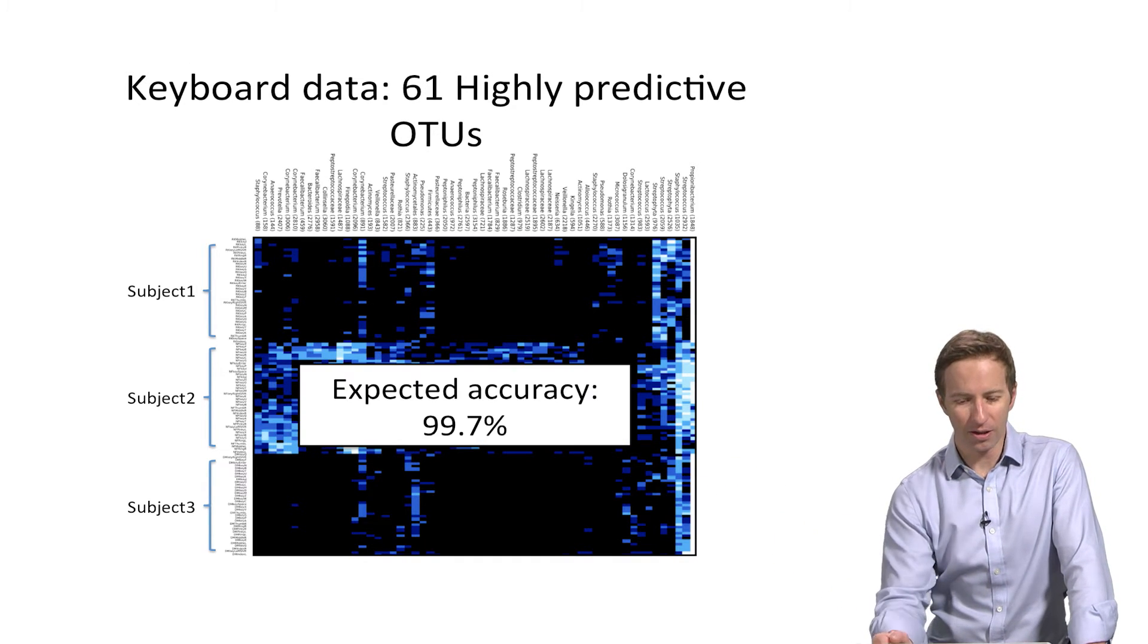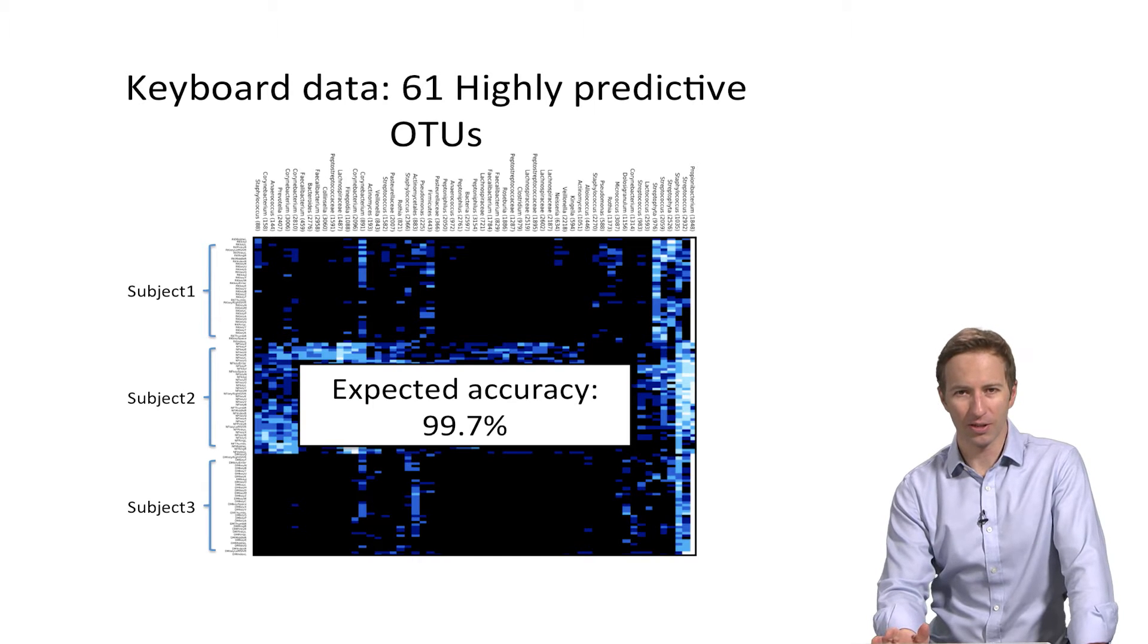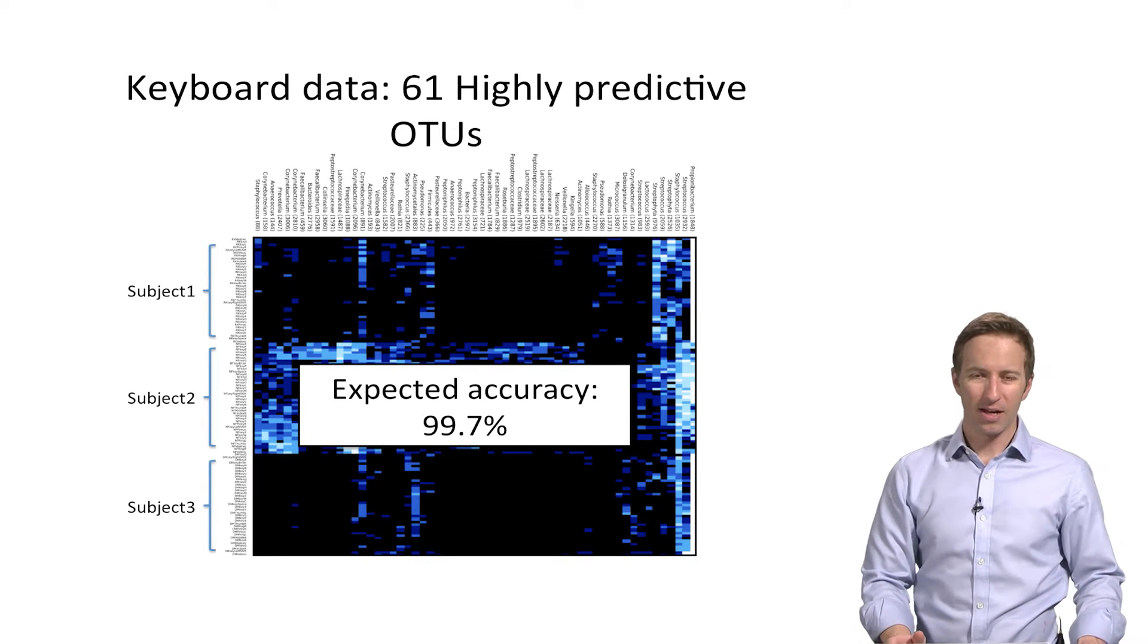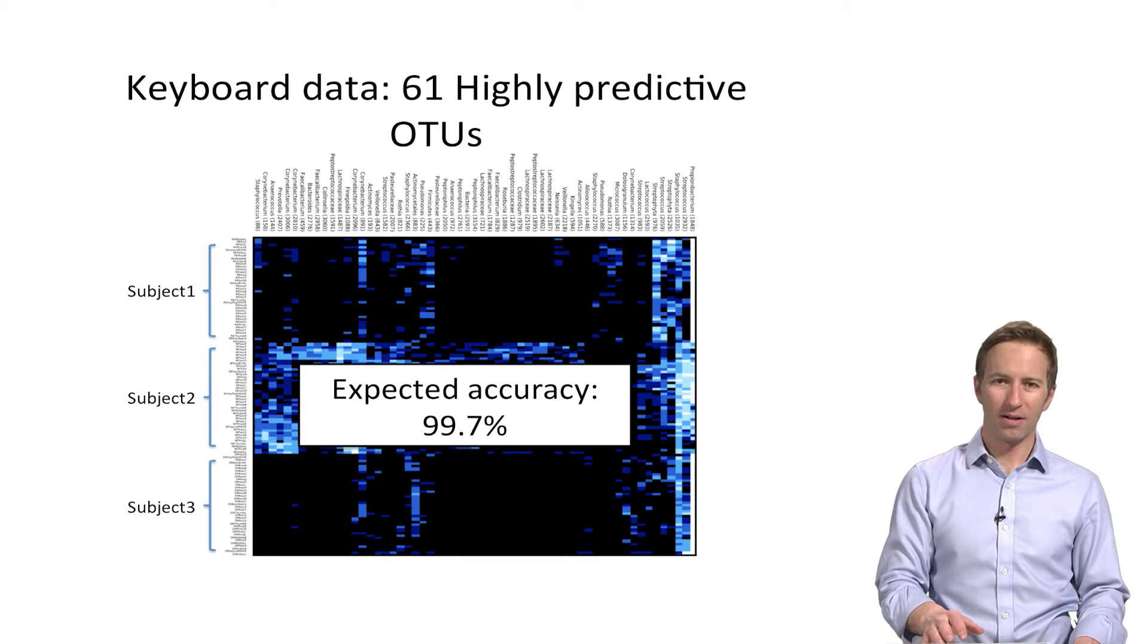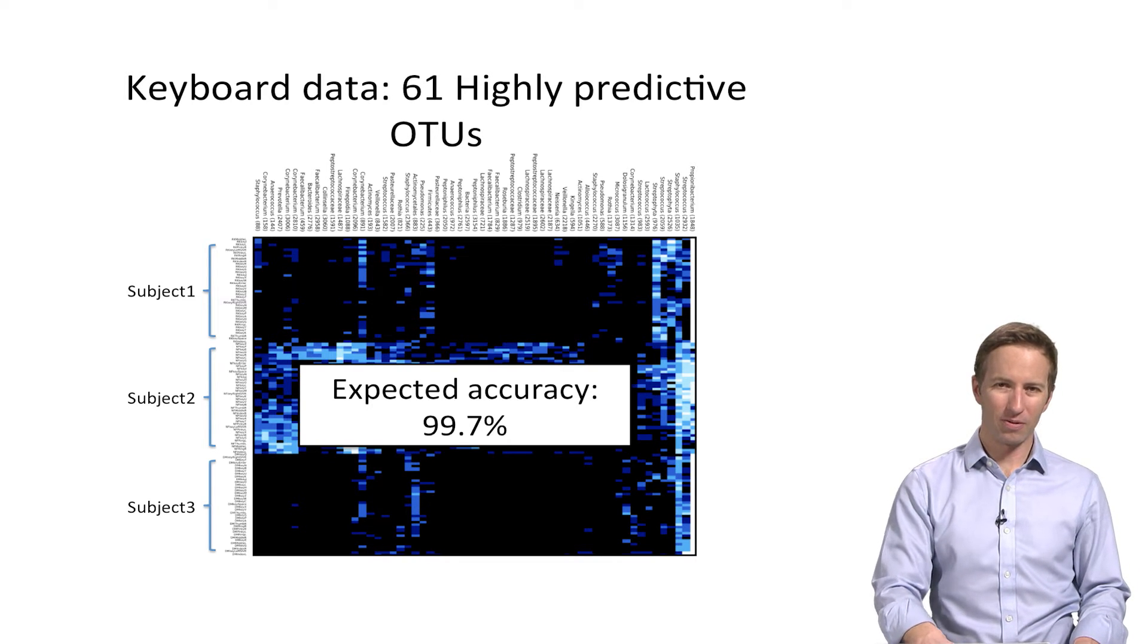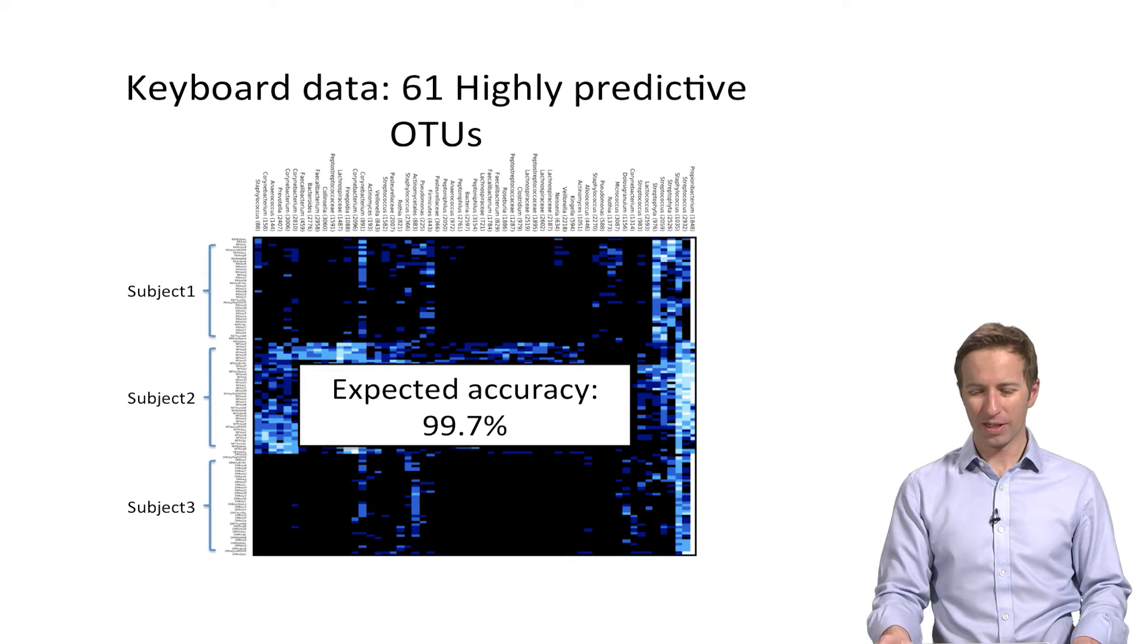And this, again, is a very easy classification task. We get almost 100% accuracy. Which means that we can tell from the keyboard, the microbial sequences from a keyboard, which person has been touching it.